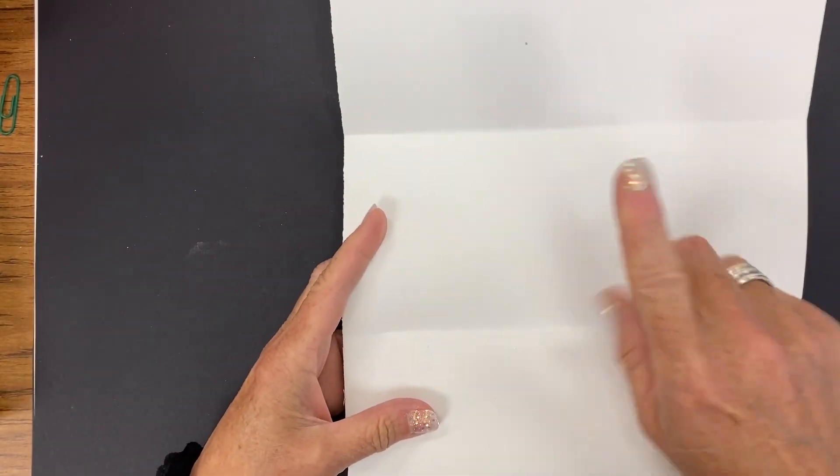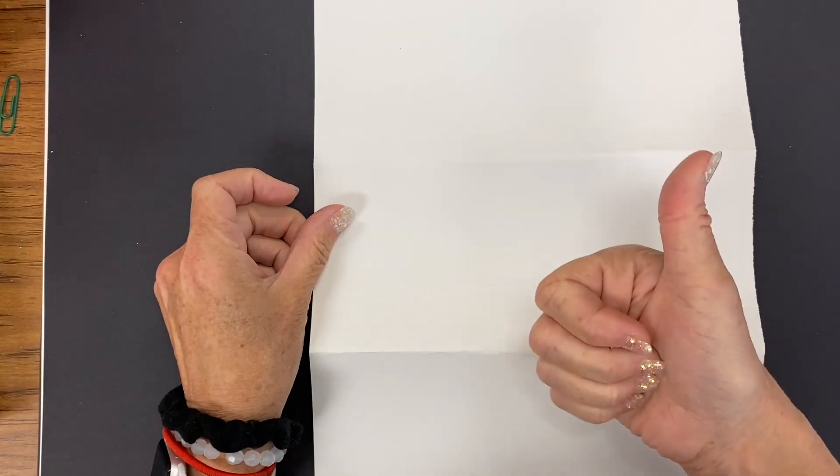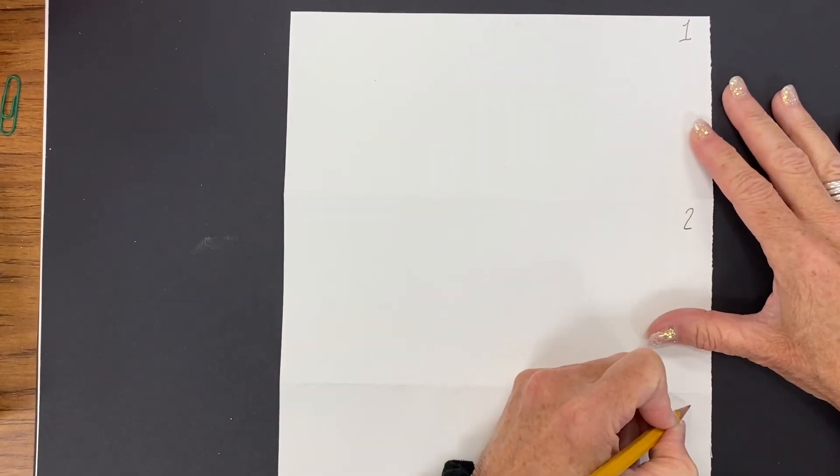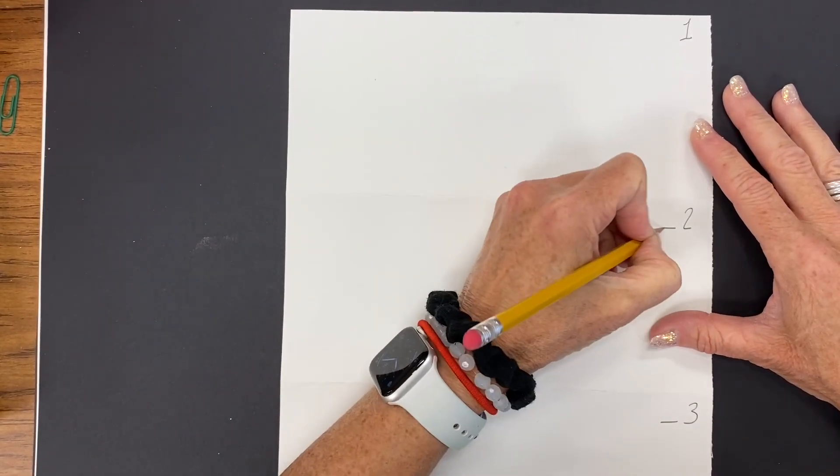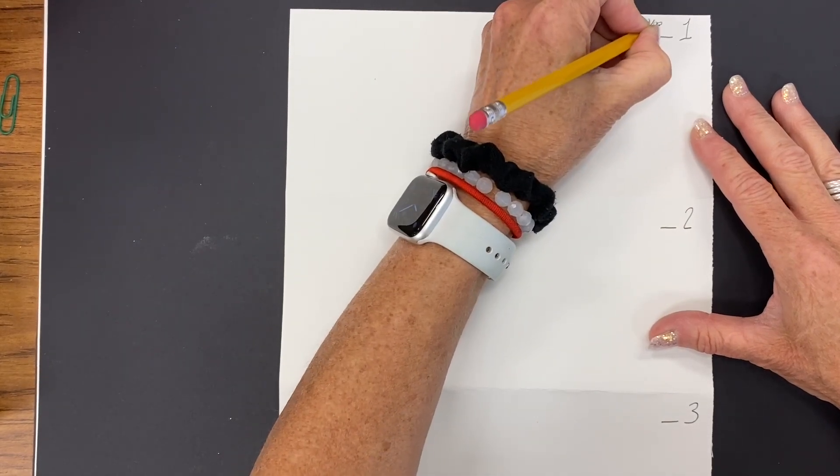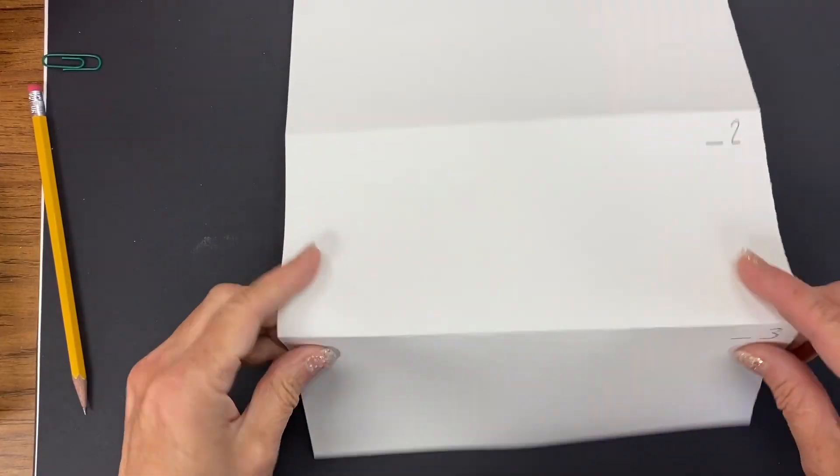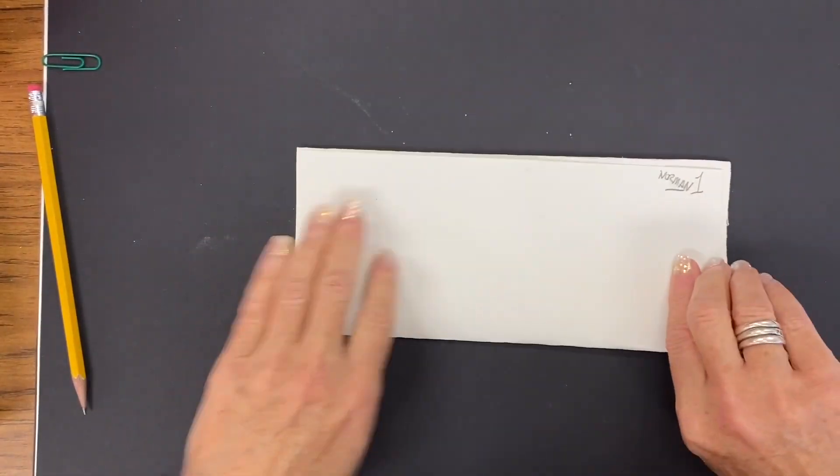Now you'd want to write on that side, but we're not going to do that. We're going to turn it over and we're going to number it. One, two, and three. Draw a little line so you can write your name. Fold it back up and we're ready to play.